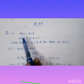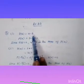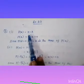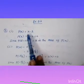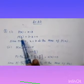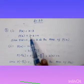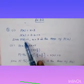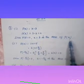Given p of x equals x minus 3. To find the zero, we check when x minus 3 equals 0. Changing the sign, the opposite of minus 3 is plus 3. So substituting x equals 3: p of 3 equals 3 minus 3 equals 0. Therefore x equals 3 is the zero of p of x.